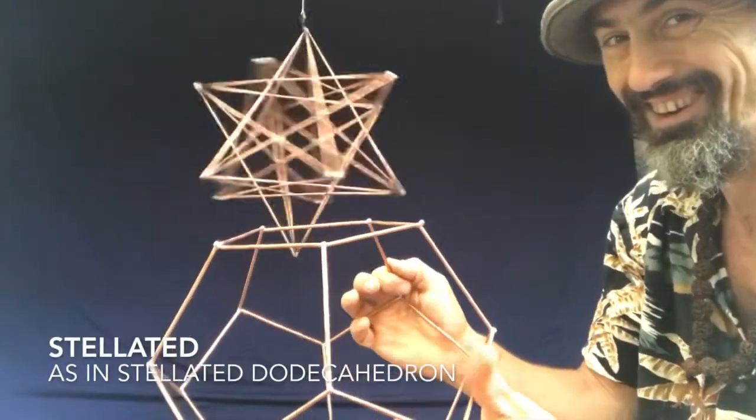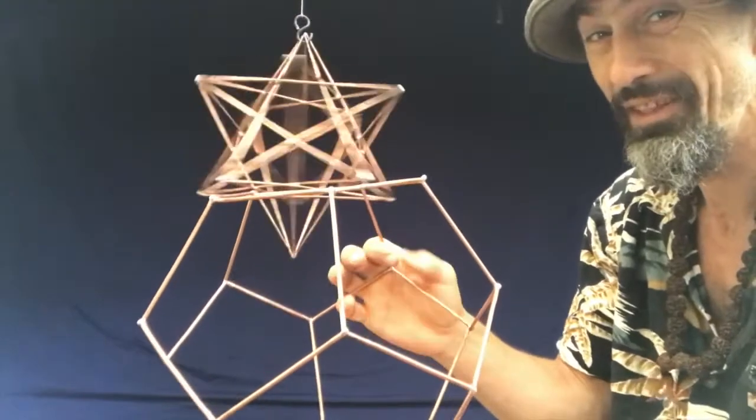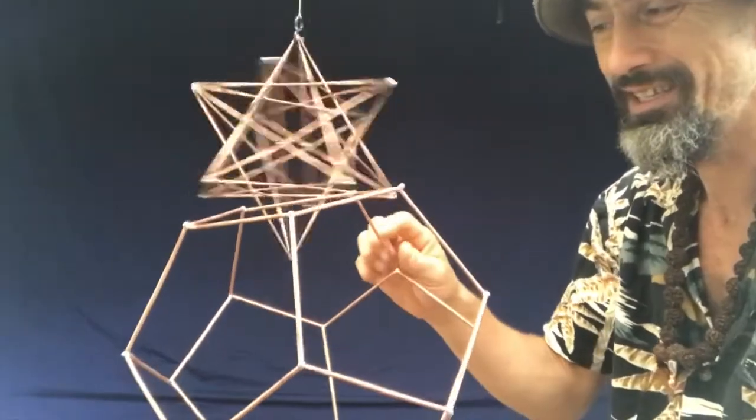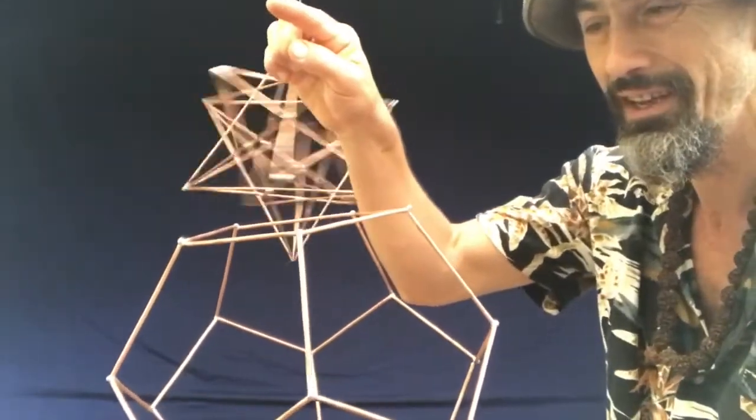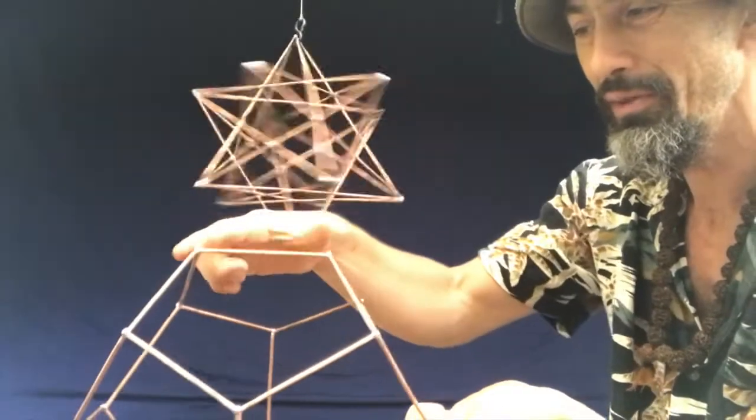It means turned into a star. So we stellate the dodecahedron by extending the lines to where they meet by the golden ratio in both directions.